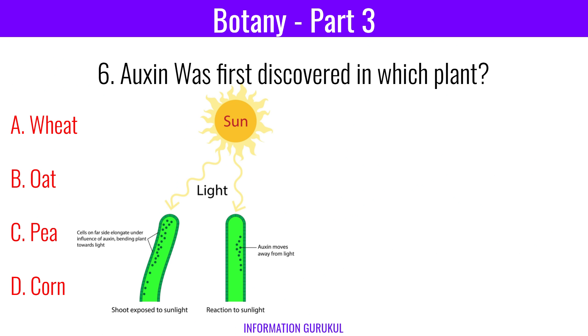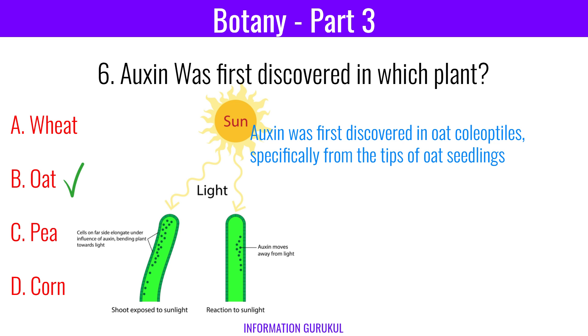Auxin was first discovered in which plant? Oat. Auxin was first discovered in oat coleoptyles, specifically from the tips of oat seedlings.